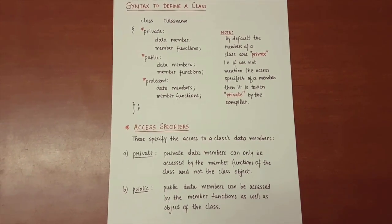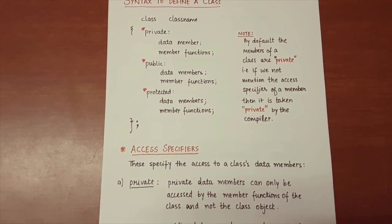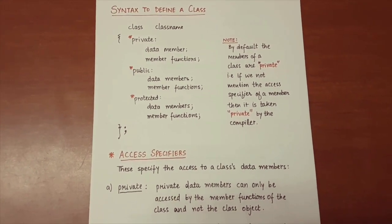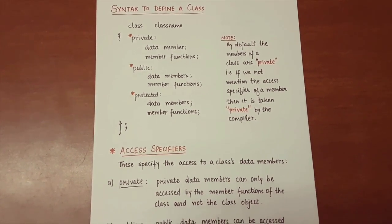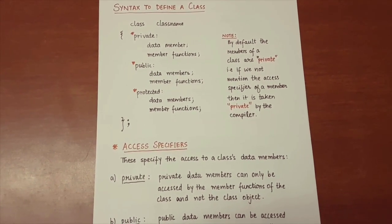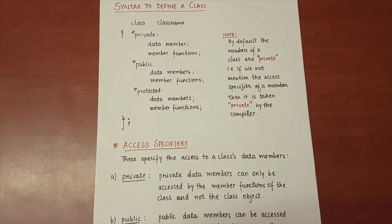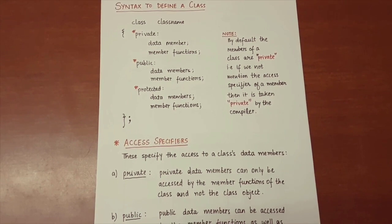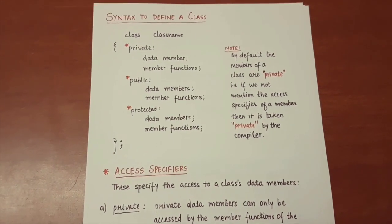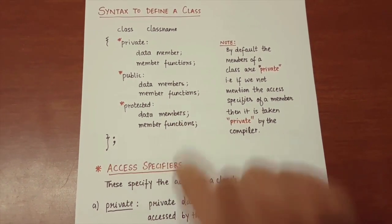The syntax to define a class is as follows: the keyword 'class' followed by the class name, then we have the private access specifier with its data members and member functions, then public data members and member functions, and protected data members and member functions. Note that by default the members of a class are private — if we do not mention the access specifier, the compiler treats it as private. Also remember to terminate the class with a semicolon after the closing brace.